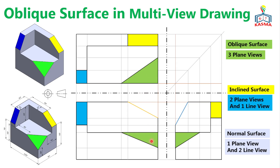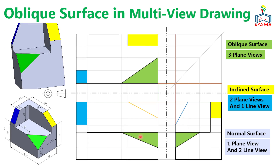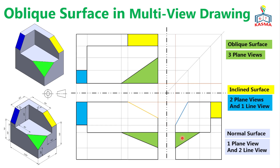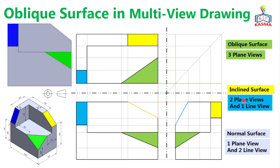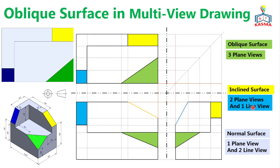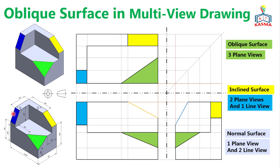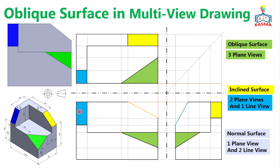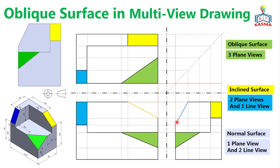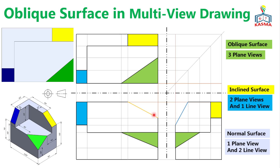Oblique surfaces have views on all three planes — a surface layout on the front, top, and side views. The green surface is oblique and has three surface views. Inclined surfaces have two surface layouts on two views but one edge or line view on the third. The blue surface is inclined — it has two distorted views on the top and front, but a line/edge view from the side. The yellow surface similarly has two distorted views on the top and side, but a line view on the front.